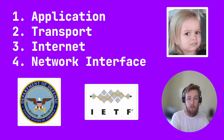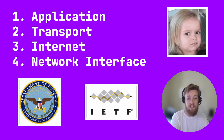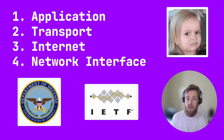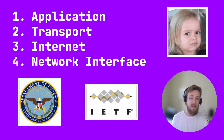Confusingly, the internet layer is sometimes called the network layer, because people confuse it with the name for the OSI model layer. Even more confusingly, the network interface layer is also sometimes called the link layer. That's because the Internet Engineering Task Force — which I think is a hilarious name for an organization, by the way — released a document called RFC 1122, which referred to this layer as the link layer. The original model was created by the US Department of Defense and they use the terms application, transport, internet, and network interface, so those are the names I tend to stick with.